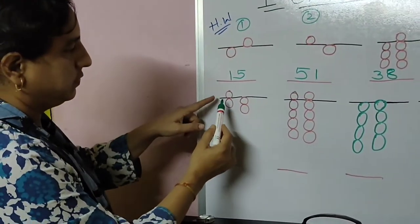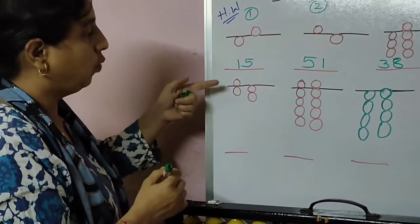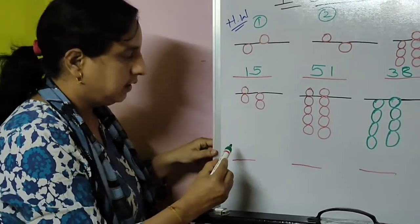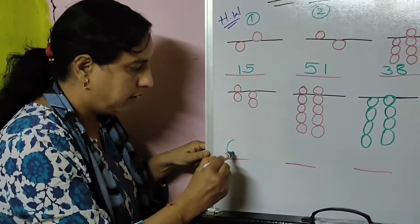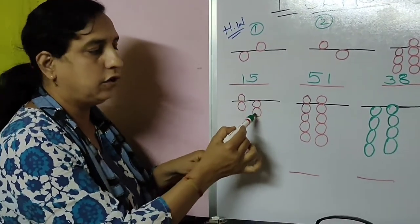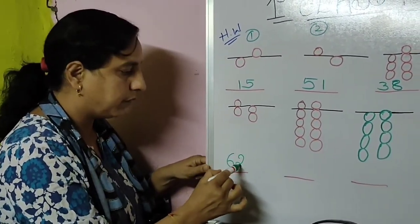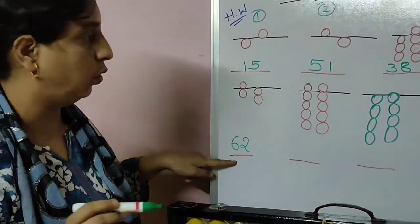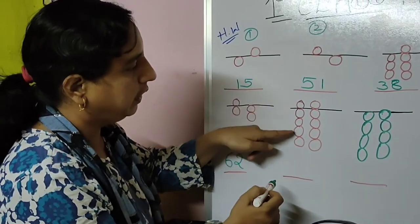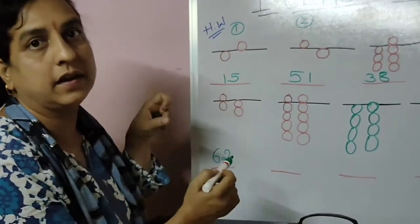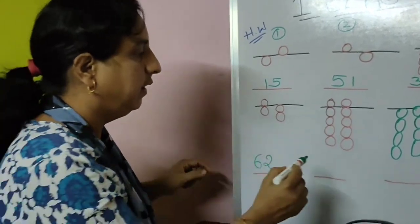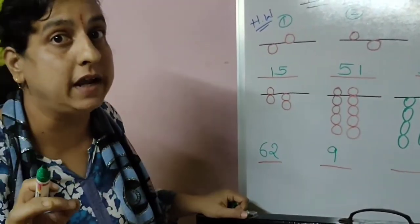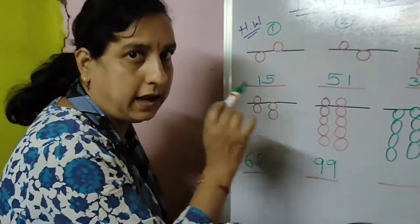So next — this one, now you only tell me what is this. Five and one — six. This is six, isn't it? So tens rod has six number, and unit rod has two — sixty-two. This question's answer is sixty-two. Now here in tens rod all the bits are there, so it is nine — value of all the bits is nine. And unit rod also you have got nine bits — so this is ninety-nine.